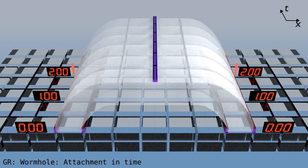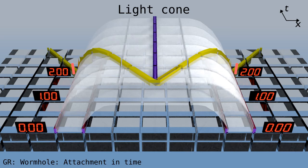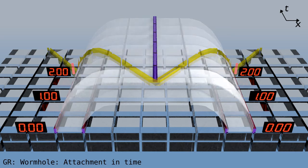The path of the flashes define a light cone, which is symmetric between left and right.